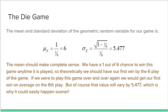For our dice game, the probability of success is 1/6. The mean is 1 ÷ (1/6) = 6. That should make complete sense — with a 1-in-6 chance to win on any toss, we would expect to get our first win by the sixth play of the game on average. Obviously it could happen sooner — in fact, the most likely outcome is winning on the very first toss.